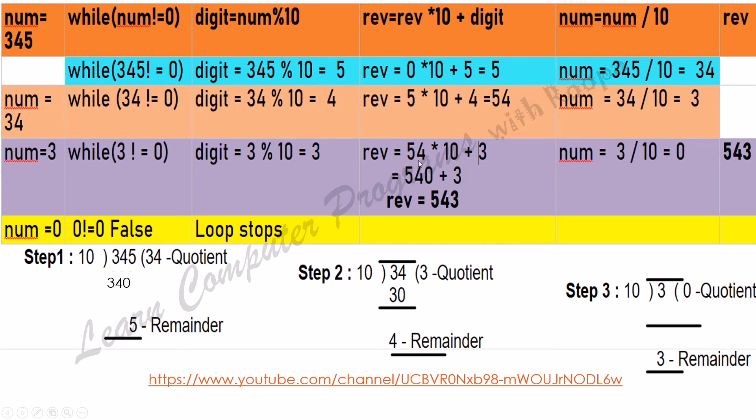Now reverse equals 54 times 10, which is 540, plus this digit, which is equal to 3. So I am getting the reverse as 543.